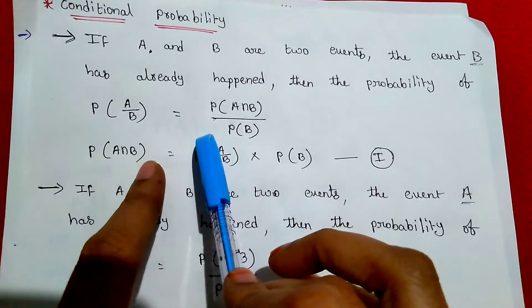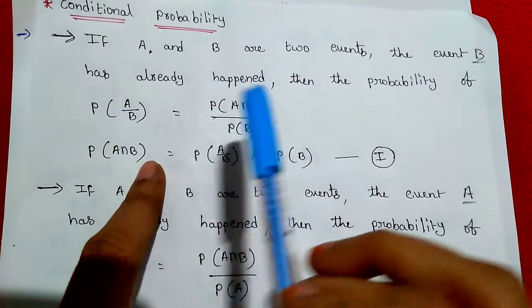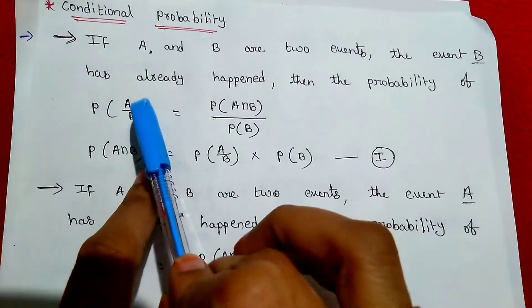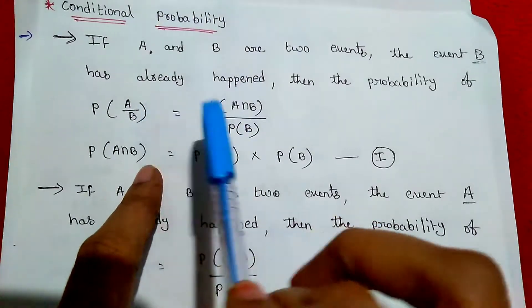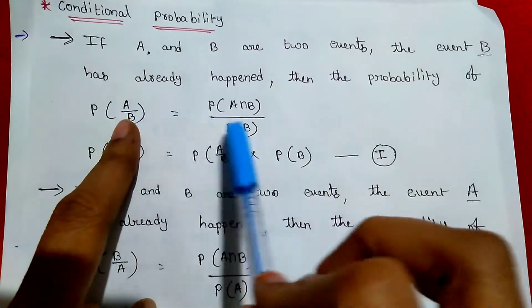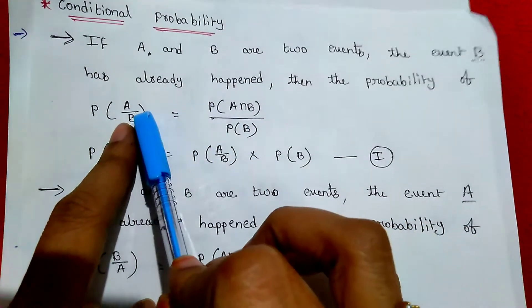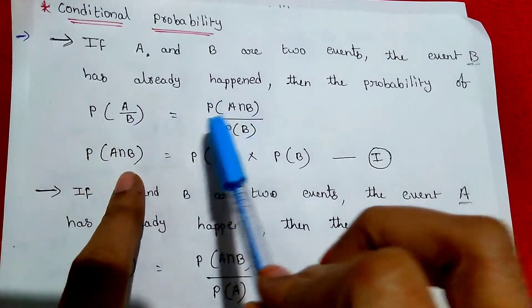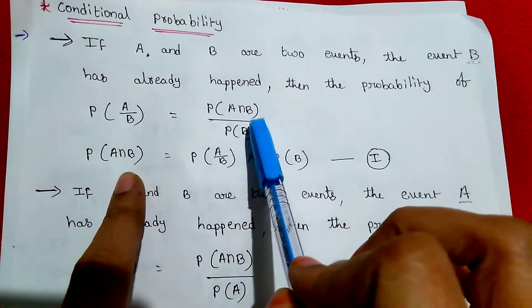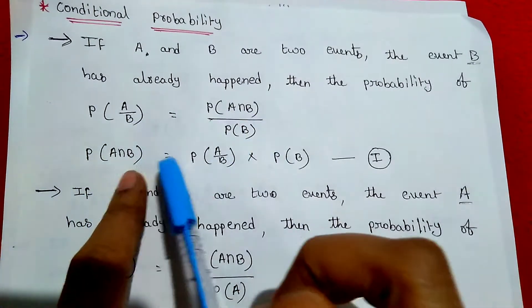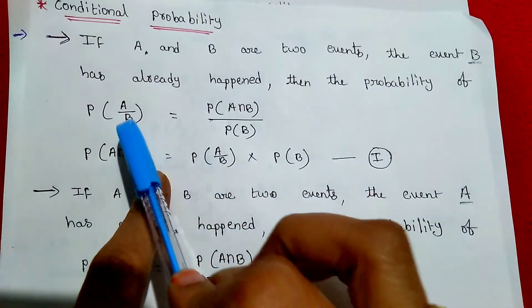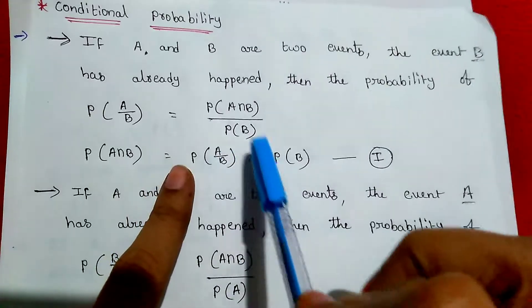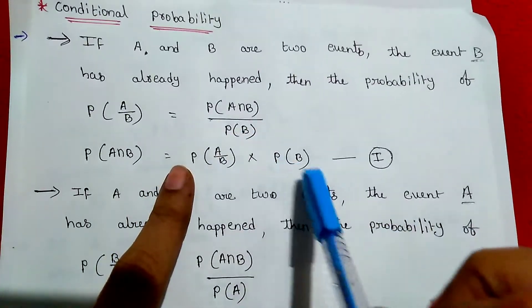This is how we note it. Probability of A intersection B is equal to probability of A given B multiplied by probability of B.